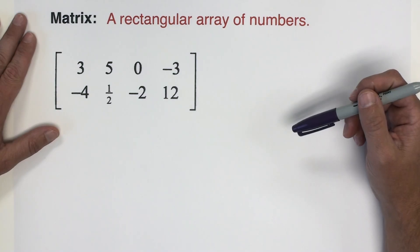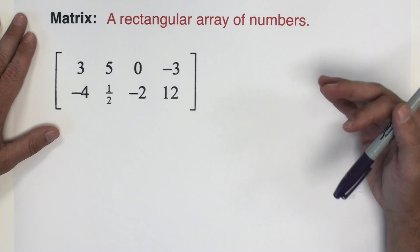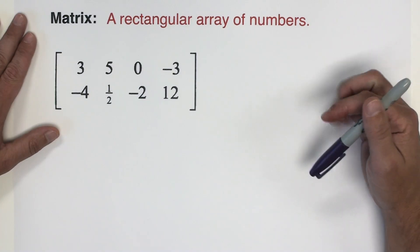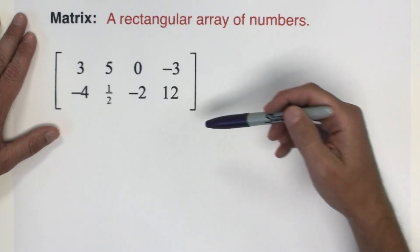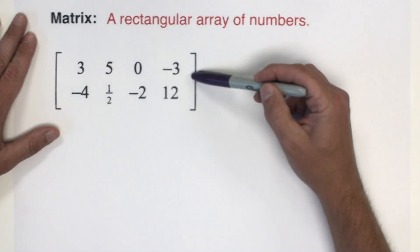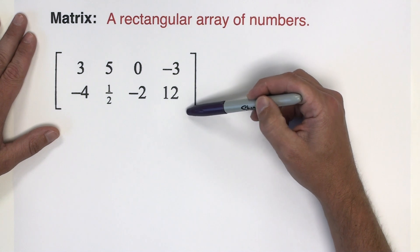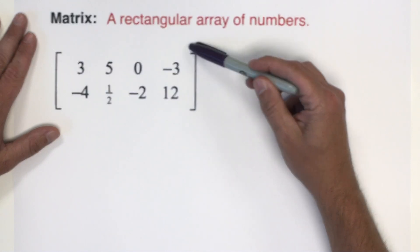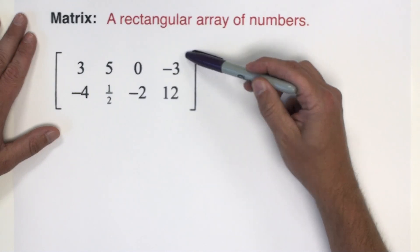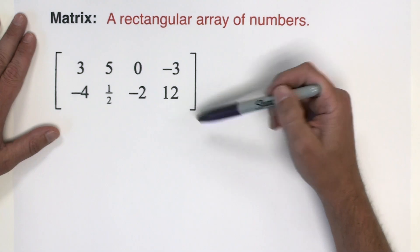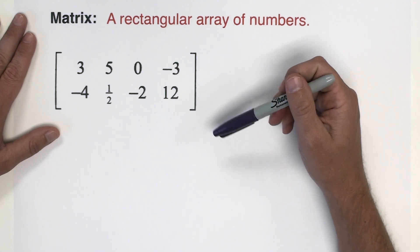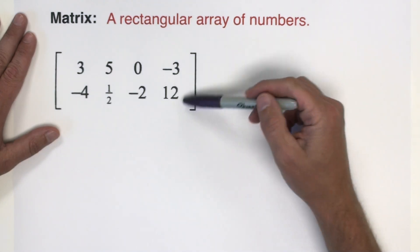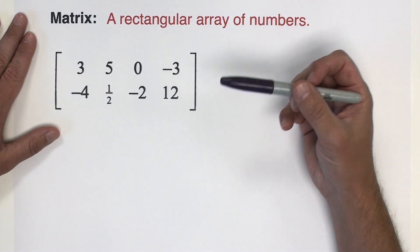A matrix is simply a rectangular array of numbers. Generally you're going to see the numbers inserted inside of brackets, although some texts might use a large set of parentheses to enclose your array of numbers. Here's an example of what a matrix might look like.